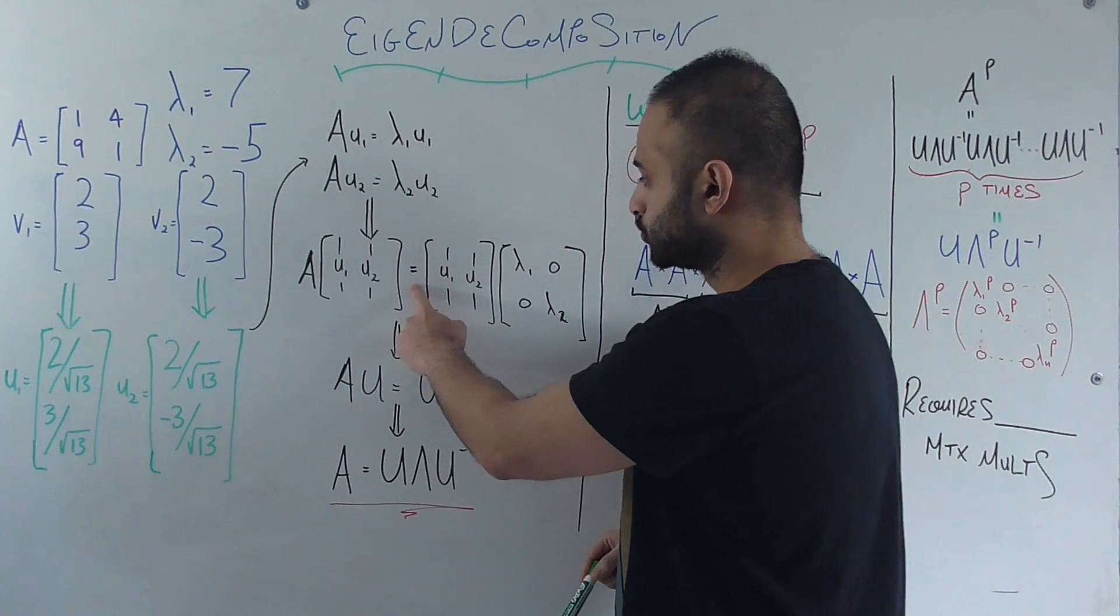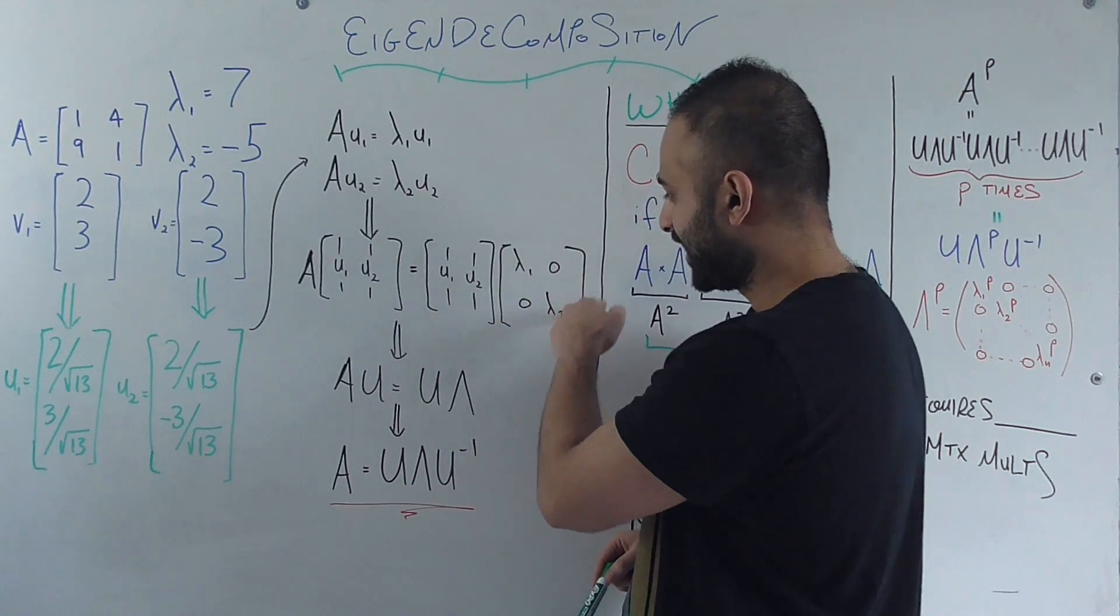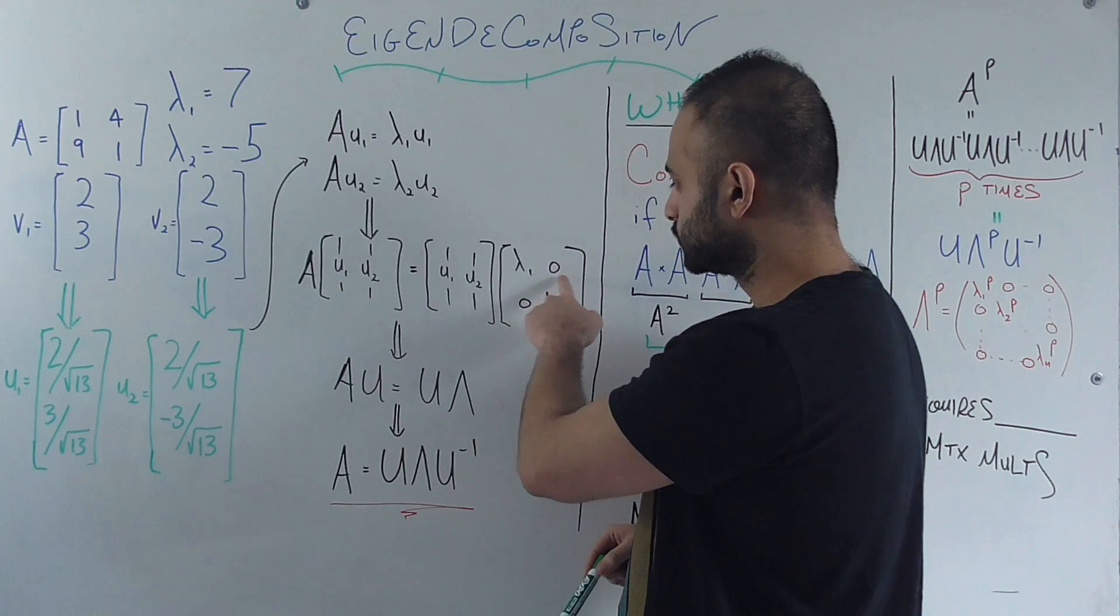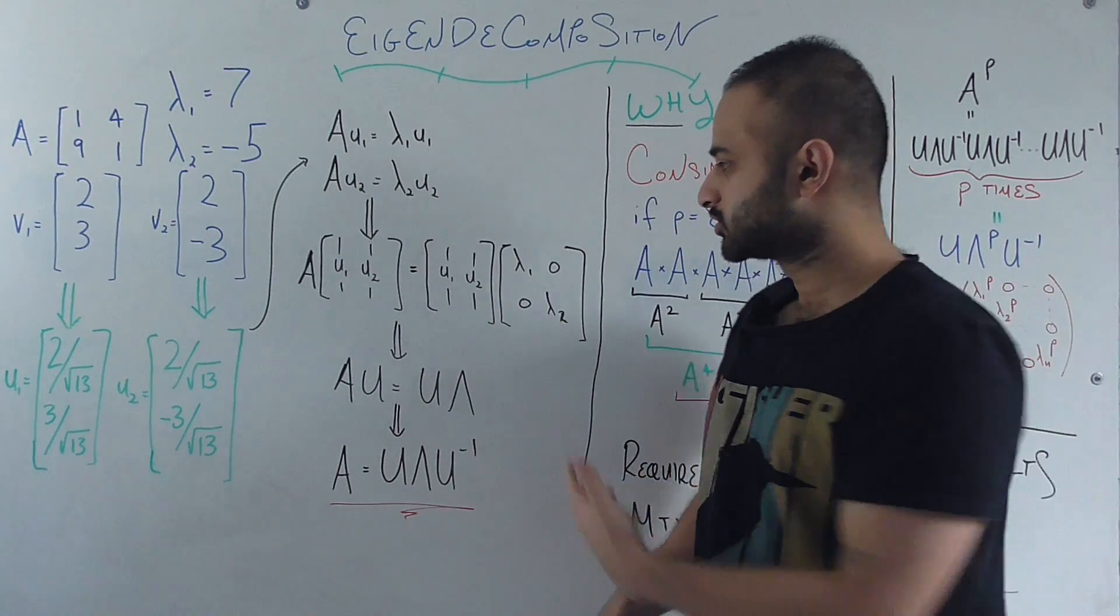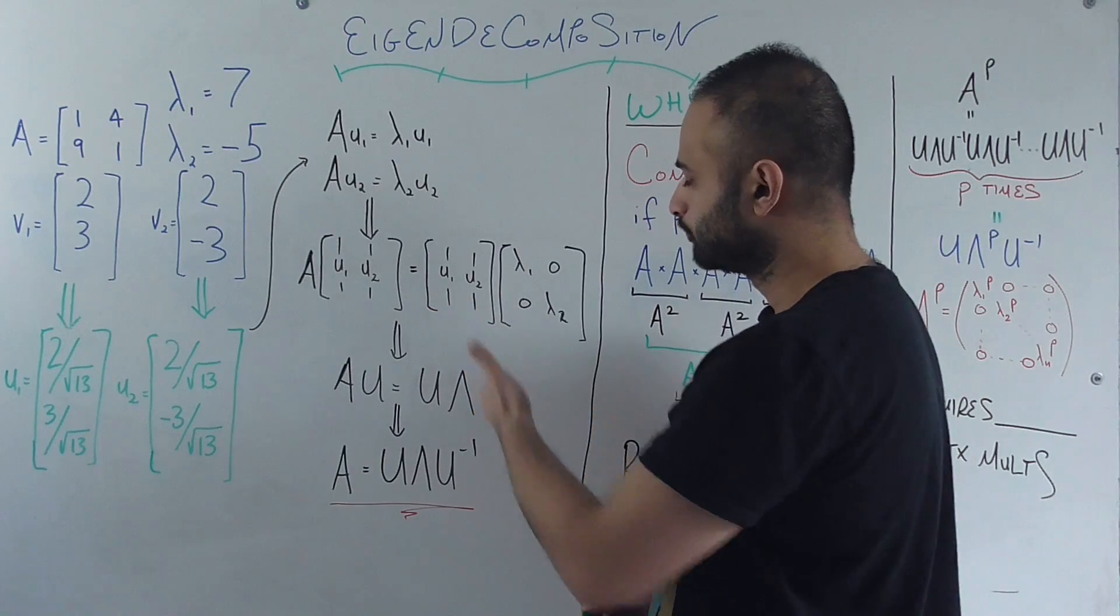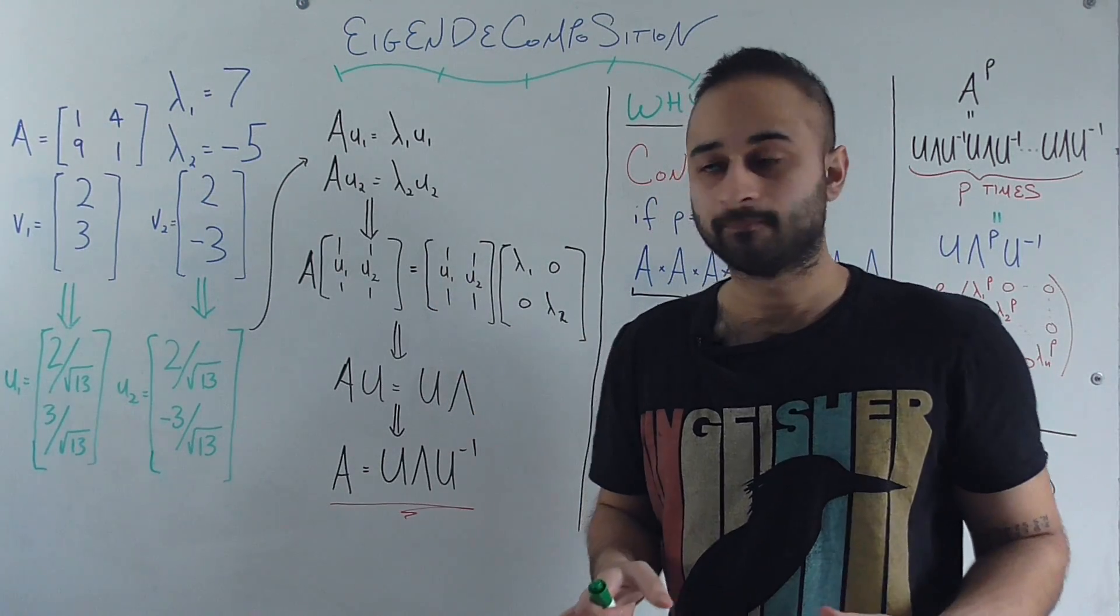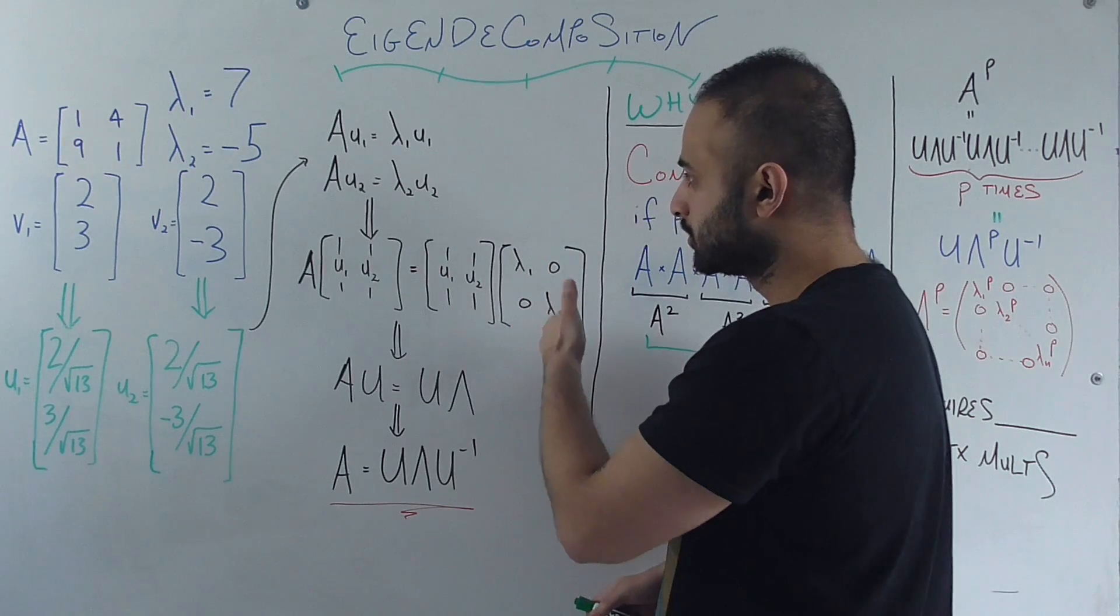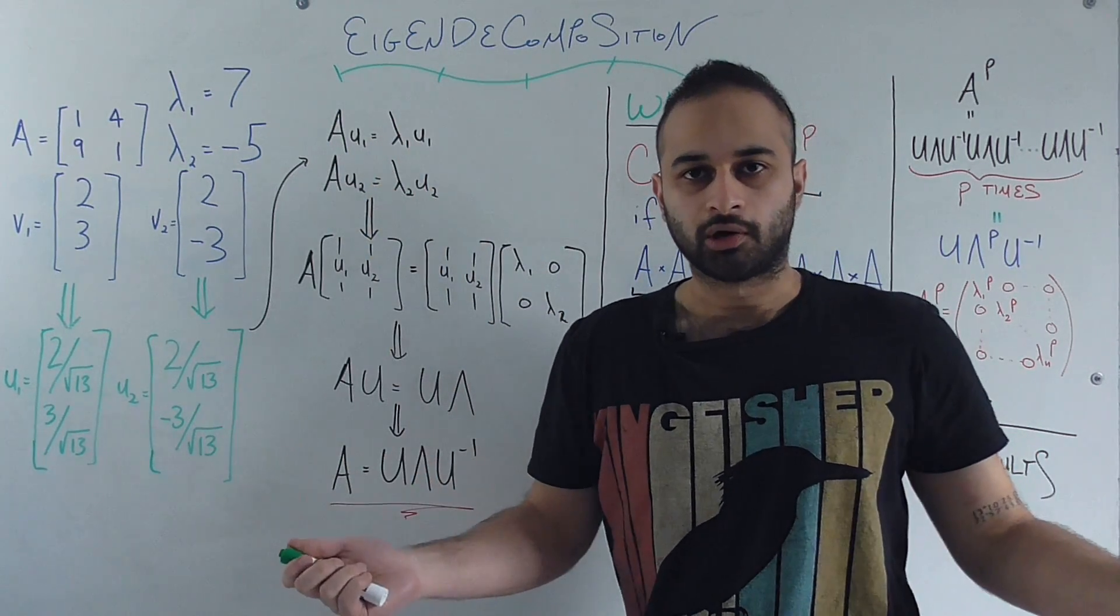And that is equal to U1 U2, so the same matrix that was right here, times this diagonal matrix lambda 1 0 0 lambda 2. Now it's not extremely obvious why this equation should be true. But if you go ahead and actually do this very small matrix multiplication, you'll see that what you get from this are exactly these two equations here.